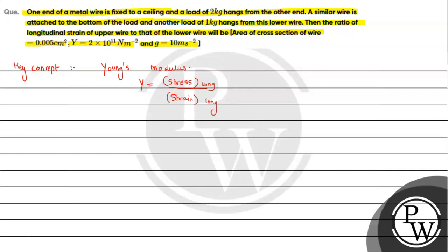First of all, we have to make a diagram of the situation. We have to draw a ceiling, a wire connected to a 2 kg block, and a similar wire attached below with a 1 kg block hanging from it.